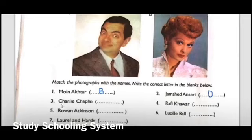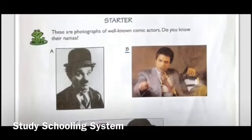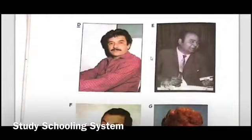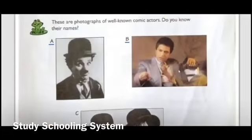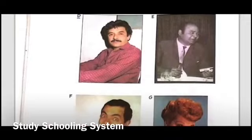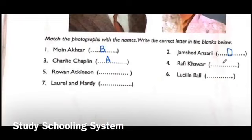Let's move towards number 3: Charlie Chaplin. Which one of the following is Charlie Chaplin? Yes, that's right — alphabet A. Fill out alphabet A over here. Number 4: Rafi Khawar. Yes, that's right — alphabet E. Write down alphabet E over here.